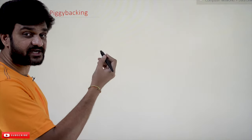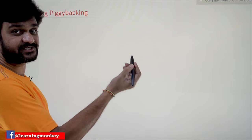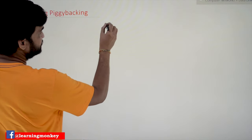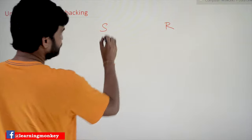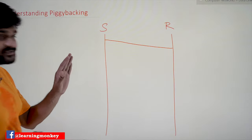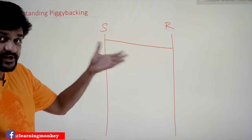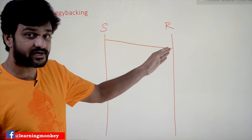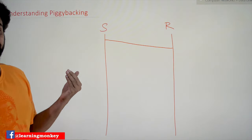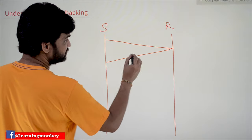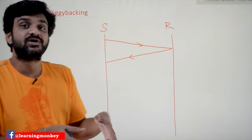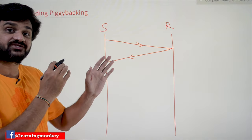In those previous videos, we have seen that the communication between the sender and receiver is unidirectional — in one direction only. The sender initiates communication by forwarding data frames to the receiver, and in response the receiver simply sends back an acknowledgment. This is how we have seen it in our previous examples.